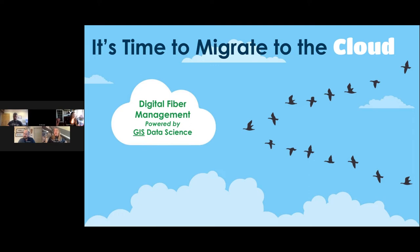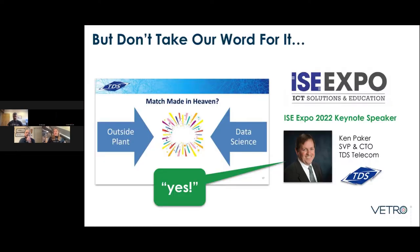If you're on this call, you're probably thinking about upgrading your fiber management system. Cloud software solutions are leading digital innovation in the fiber management system — FMS — space. Don't just take our word for it: if you attended ISE Expo this year, you may have caught TDS Telecom's CTO Ken Paker's excellent keynote. He demonstrates that while other areas of telecom have been boosted by cutting-edge technologies, engineering and construction are on a slower trajectory toward digital transformation. He points out a massive opportunity to optimize processes around outside plant especially — a match made in heaven: outside plant and data science.